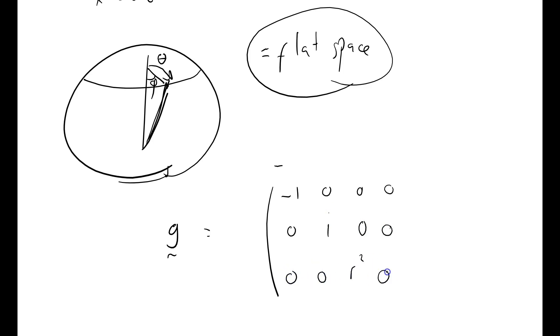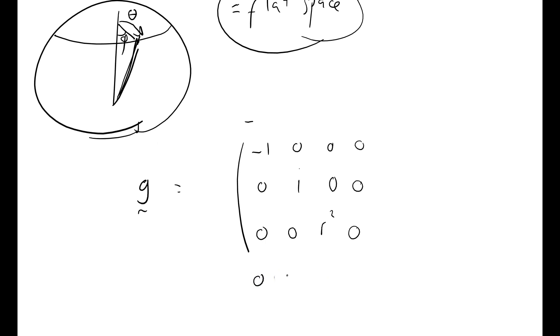0, R squared, 0, 0, 0, 0, R squared sine squared theta. And what have we got here? This is the time, R, theta and phi. Time, R, theta and phi.